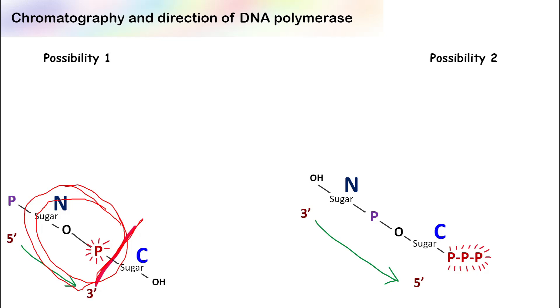And coming to second possibility, if the direction was from three prime to five prime, then the enzyme will break this bond between sugar and phosphate. In this case, the labeled phosphate is still with cytosine.